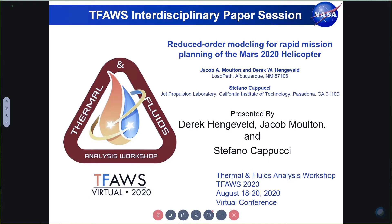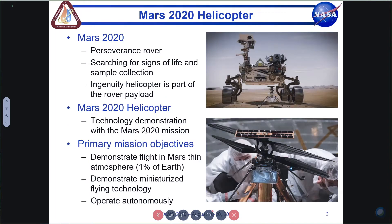The title of the talk is Reduced Order Modeling for Rapid Mission Planning of the Mars 2020 Helicopter. LoadPath has developed a software tool called Veritrekt, which allows you to convert thermal models — specifically thermal desktop models — into a reduced order form, which allows you to run models very quickly. NASA JPL identified that capability as something that would be valuable for the Mars 2020 program.